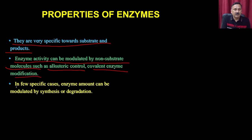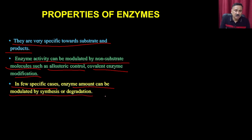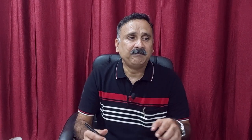Enzyme activity can be modulated by non-substrate molecules such as allosteric control or covalent enzyme modifications. In a few specific cases, enzyme amount can be modulated by synthesis or degradation. This actually happens within the cell when they are degrading the enzyme to modulate reactions or synthesizing new enzyme molecules. We will discuss this when we cover translation and other molecular events.